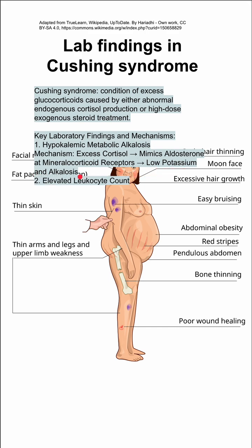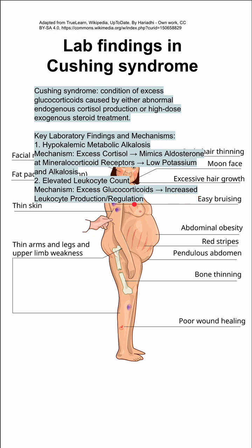Cushing syndrome can also cause an elevated leukocyte count. The excess glucocorticoids increase leukocyte production and regulation, and this also causes an immunosuppression response. Don't get confused — because you have immunosuppression, you might expect low white blood cells, but it's actually the opposite: you have high white blood cells despite the immunosuppression.